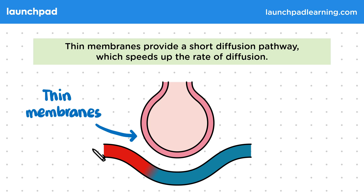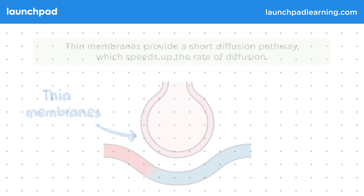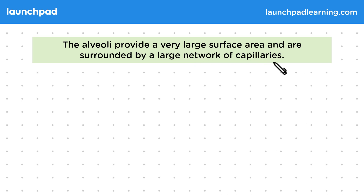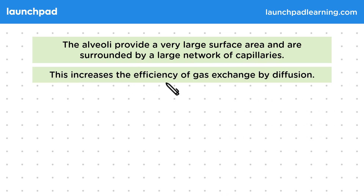Let's have a look at some of the other adaptations that alveoli have for gas exchange. The alveoli provide a very large surface area and are surrounded by a large network of capillaries. This increases the efficiency of gas exchange by diffusion.